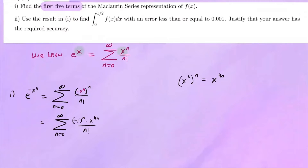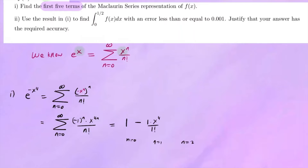We're going to write down the first five terms, letting n run until we get five terms. When n equals 0, the exponent terms go to 0, so we get 1 for the first term. When n equals 1, we get negative 1 times x to the 4th over 1 factorial. When n equals 2, negative 1 squared is positive, so we get x to the 8th over 2 factorial. When n equals 3, it's negative, giving us negative x to the 12th over 3 factorial.